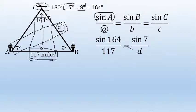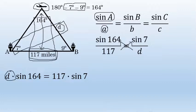Cross multiplying: d times sin(164) equals 117 times sin(7). To isolate d, divide both sides by sin(164). The distance from the airplane to Airport B is d = 117 × sin(7) / sin(164).